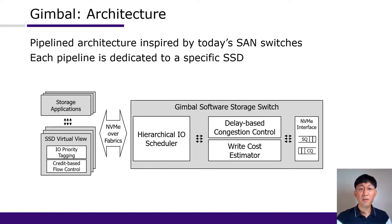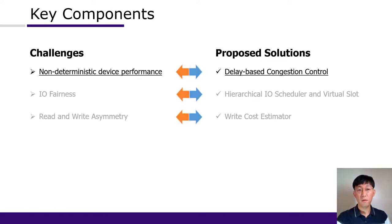We designed the software storage switch Jimbo, which has a pipeline architecture. Each pipeline consists of three major components: a hierarchical IO scheduler, delay-based congestion control, and a write cost estimator. In Jimbo, each pipeline is dedicated to a specific SSD and shares nothing with others. With the IO performance of SmartNIC, the pipeline on one ARM core is sufficient for the full bandwidth of one SSD.